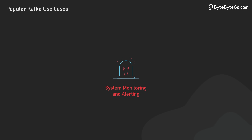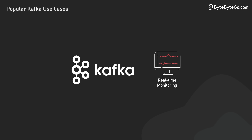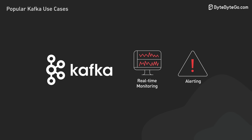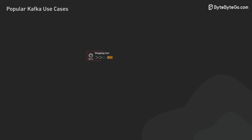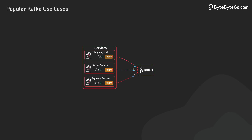The third use case is real-time system monitoring and alerting. While log analysis helps investigate past events, this use case is different — it's about immediate, proactive system health tracking and alerting. Kafka serves as a central hub for metrics and events from across the infrastructure, ingesting data from application performance metrics, server health stats, network traffic data, and more.